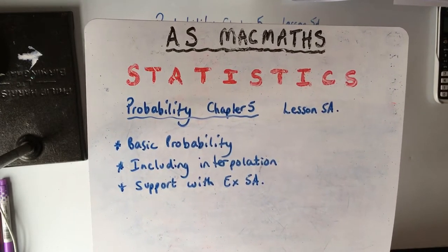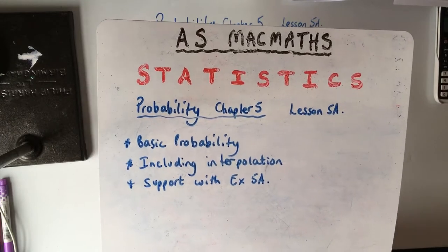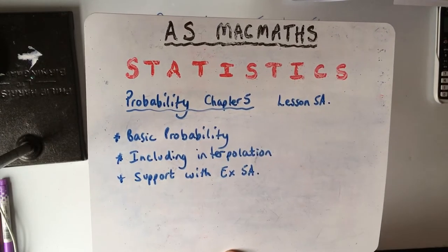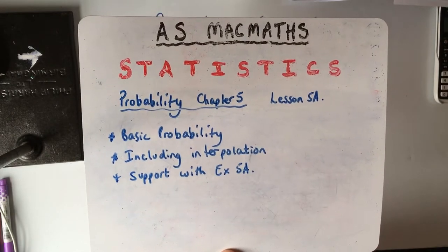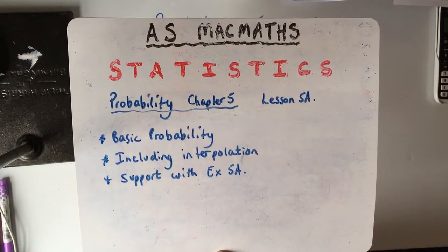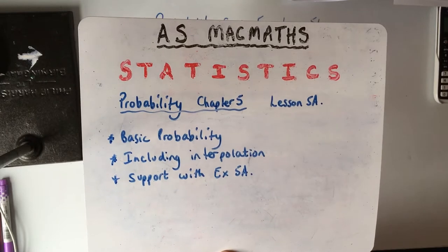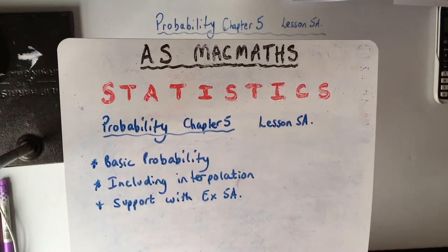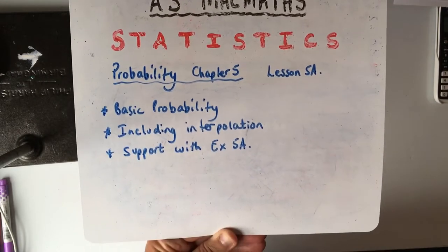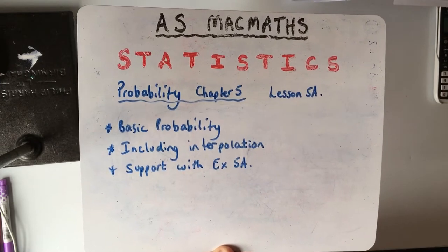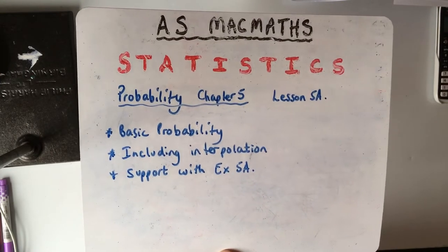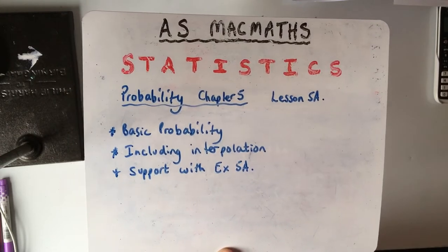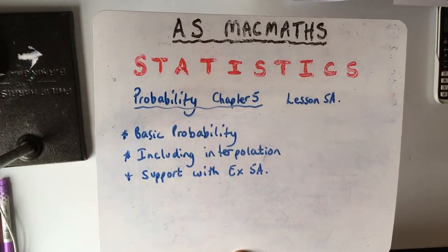I'll cover section 5a or 5.1 in the book. I'll do four or five lessons on probability just to cover the exercises. There's actually four exercises and then a mixed exercise. It's a big overlap to GCSE, so all of the usual things are in there, tree diagrams, Venn diagrams, which you've done at GCSE, but I'll go over those again sort of quickly.